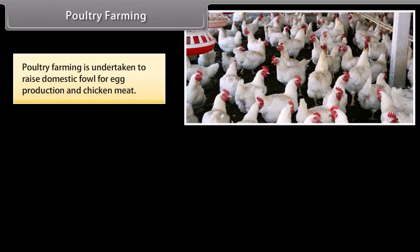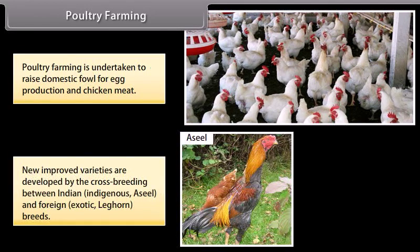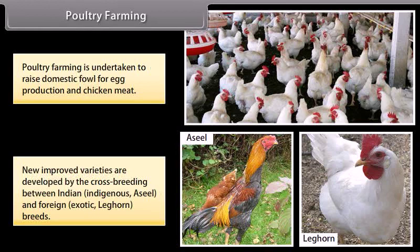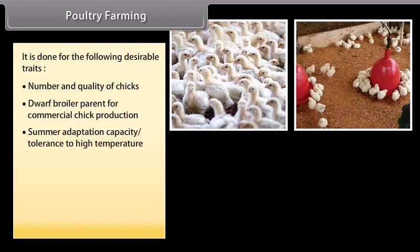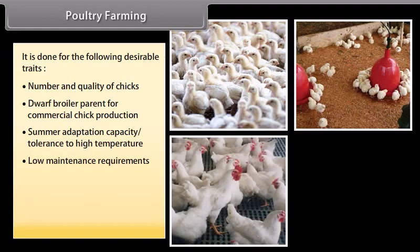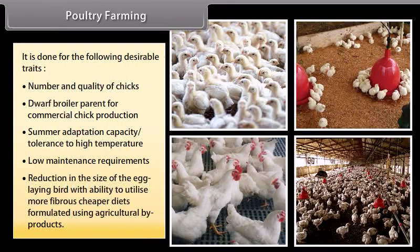Poultry farming is undertaken to raise domestic fowl for egg production and chicken meat. New improved varieties are developed by cross-breeding between Indian indigenous Aseel and foreign exotic Leghorn breeds. This is done for desirable traits such as number and quality of chicks, dwarf broiler parent for commercial chick production, summer adaptation capacity, tolerance to high temperature, low maintenance requirements, and reduction in the size of the egg-laying bird with ability to utilize more fibrous, cheaper diets formulated using agricultural by-products.